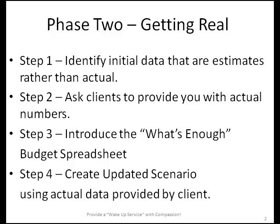The second phase of integrating 10 Weeks with the WIN score is to get real numbers from the client. This is a four-step process outlined in this slide. Step 1 is to identify initial data that are estimates rather than actual. Step 2 is to ask your clients to give you their real numbers. Step 3 is to introduce the What's Enough Budget spreadsheet. And Step 4 is to create an updated scenario using the actual data provided by your client.